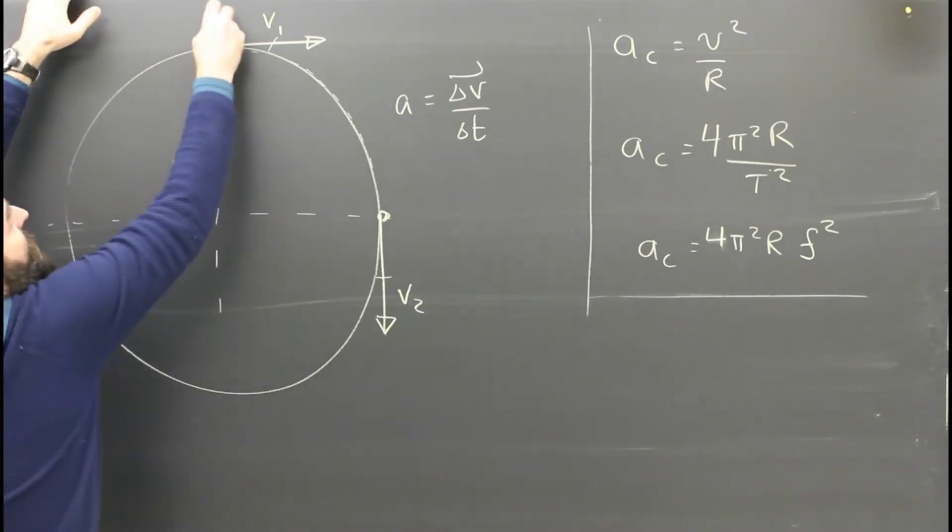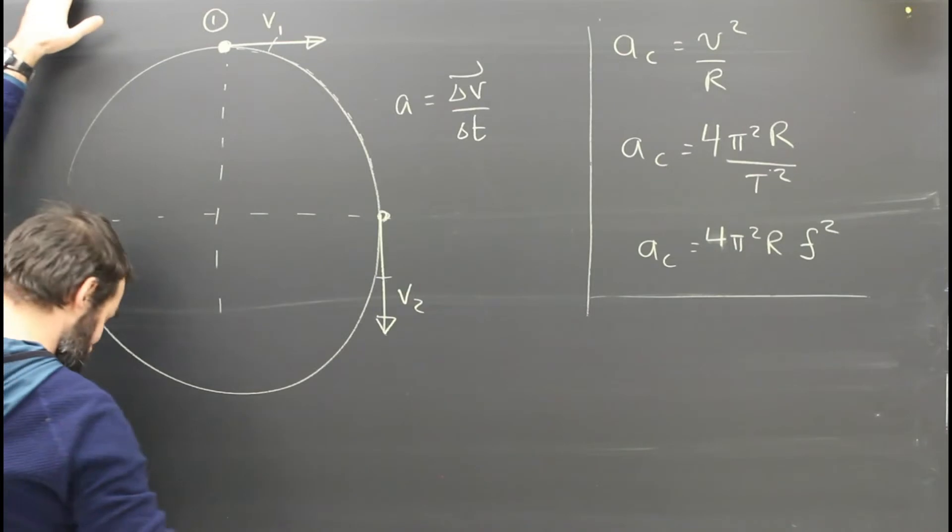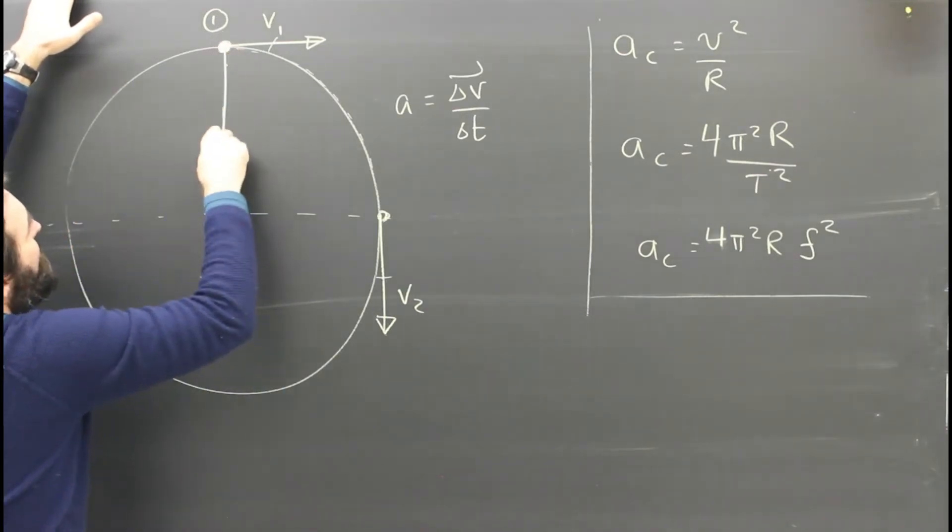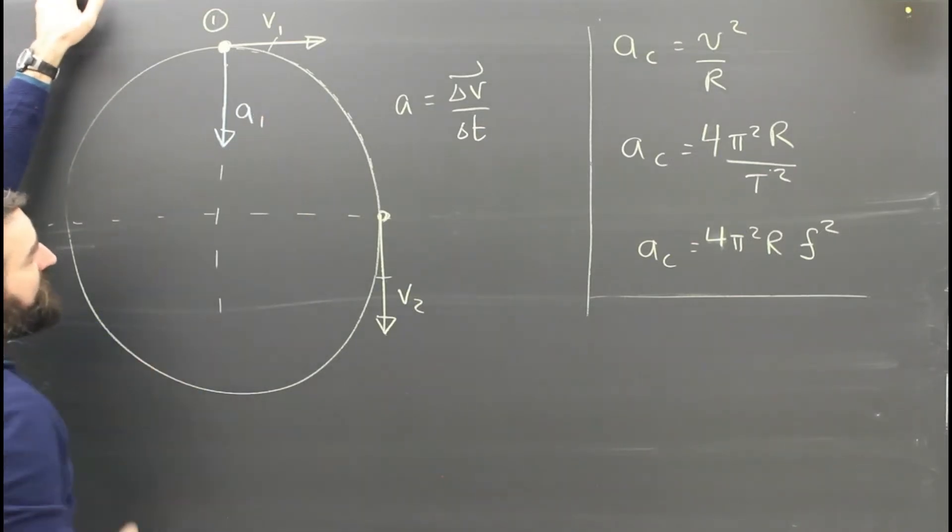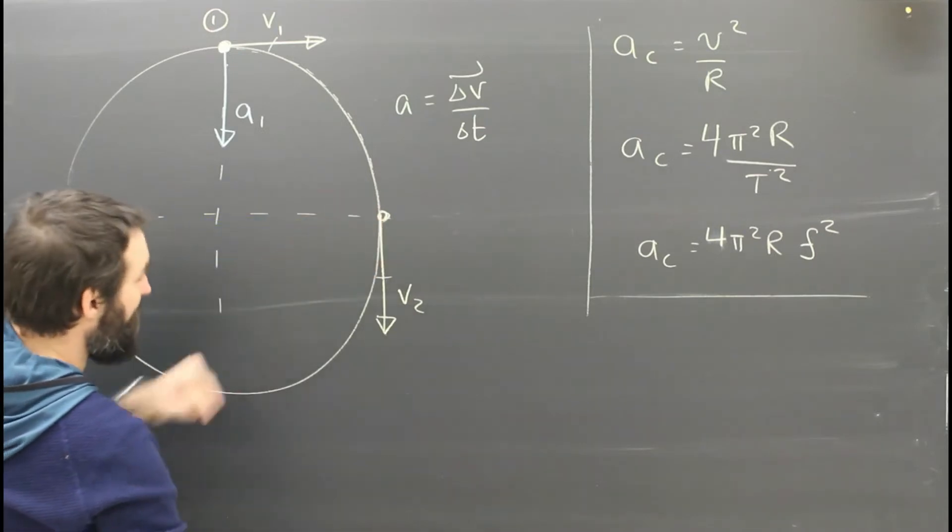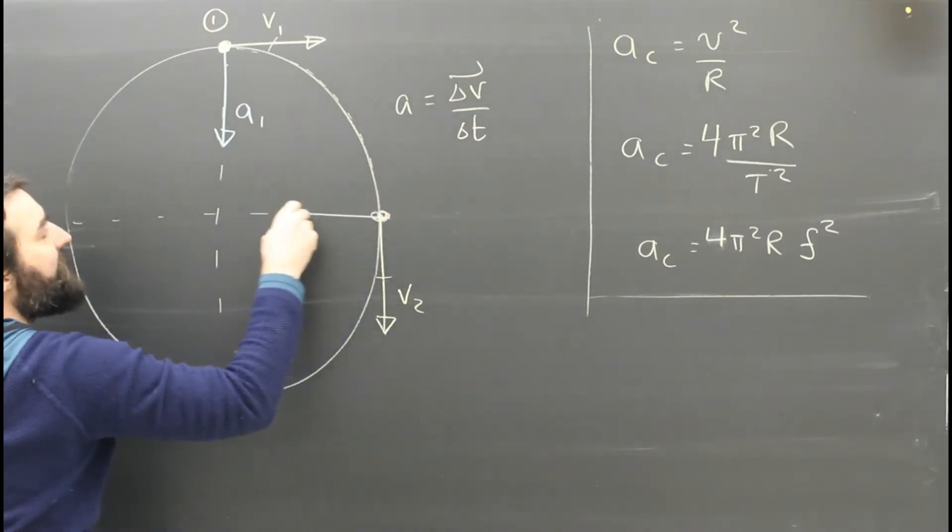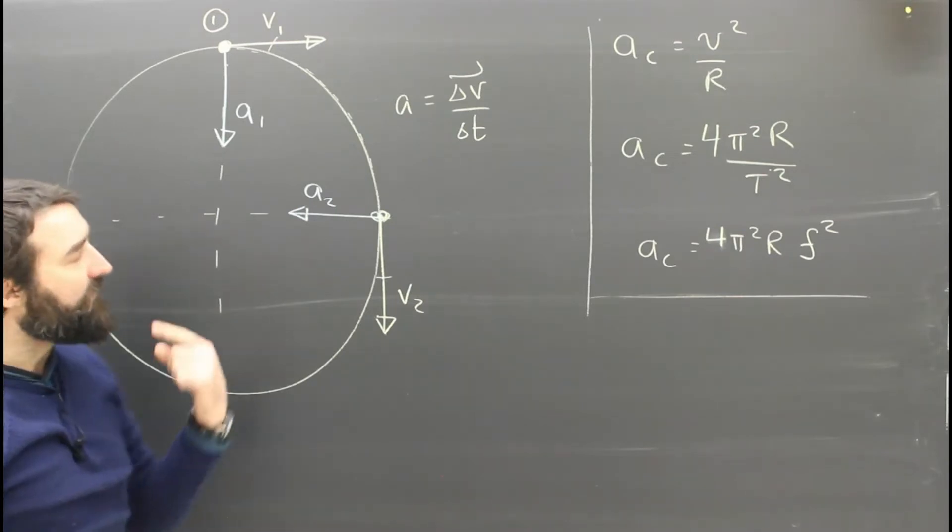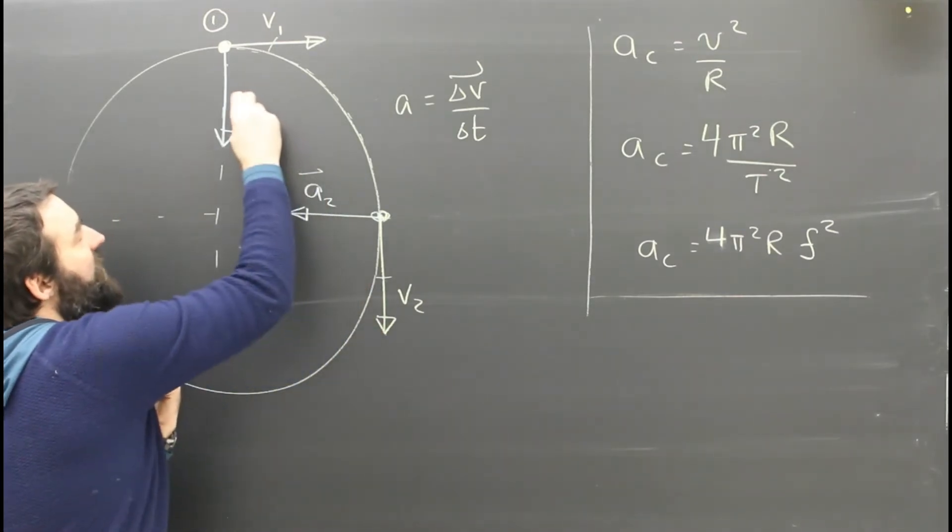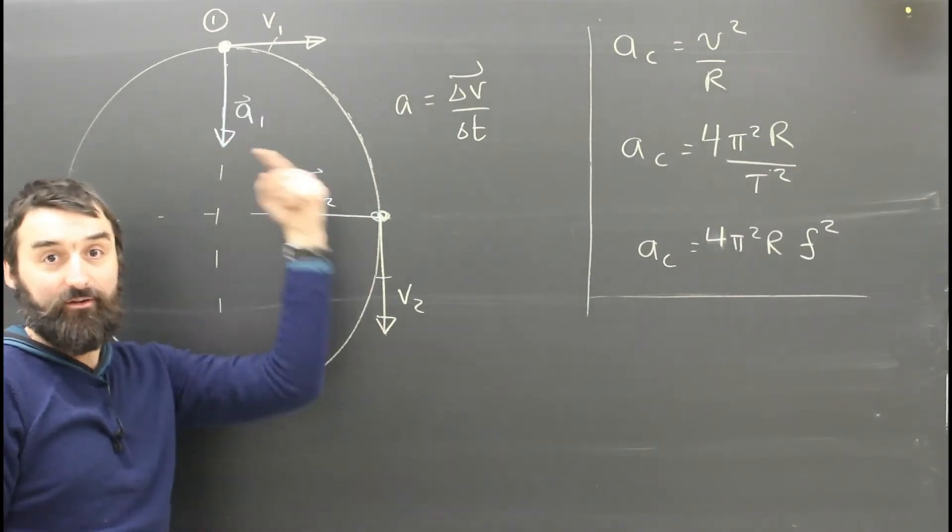So, at spot one here, this car is accelerating, so I do that in blue, it is accelerating towards the center of the circle. That would be the direction of the acceleration at spot one, but over here at spot two, the car would be accelerating to the left. So, in circular motion, the direction of the acceleration is towards the center of the circle.